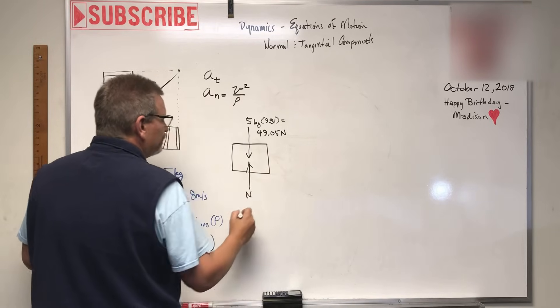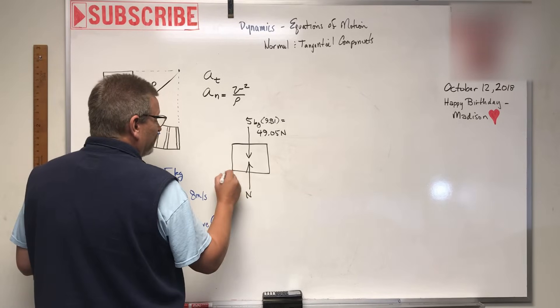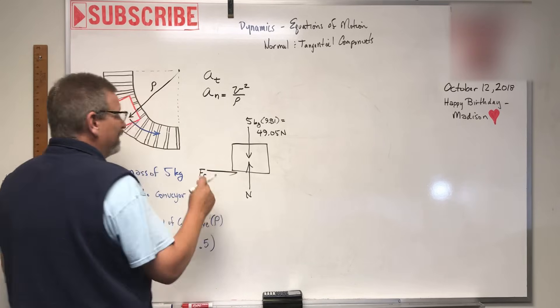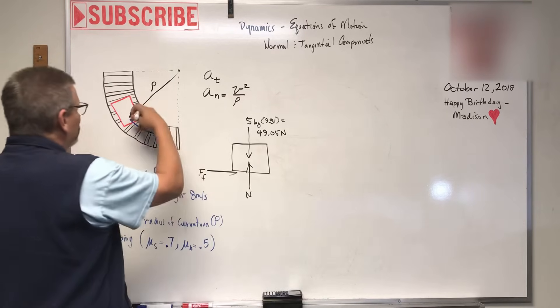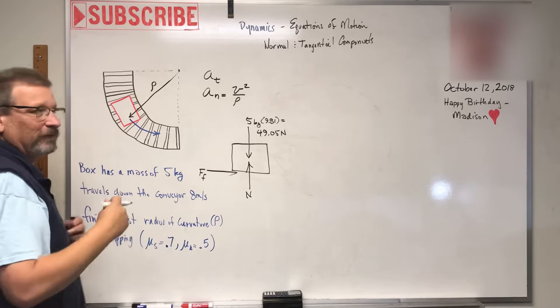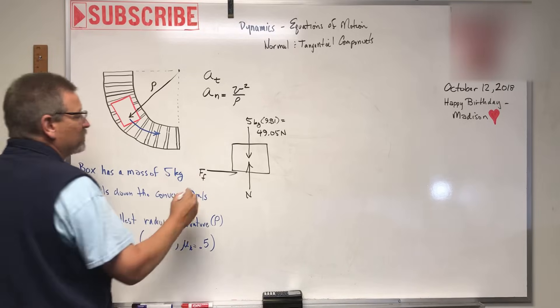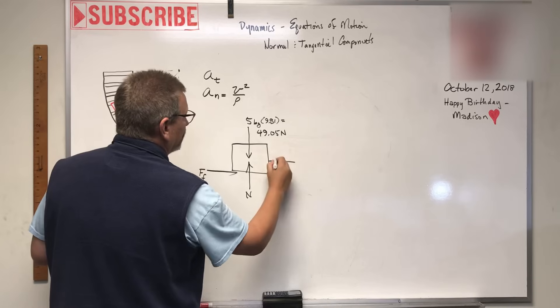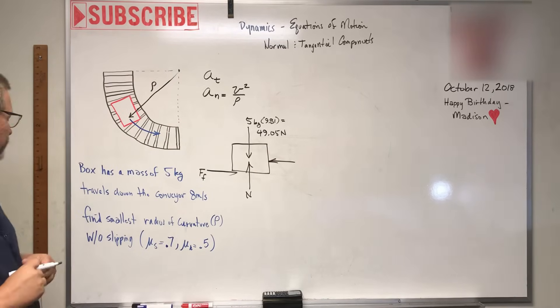What else is going on? There's a normal force down here of 49.05, and then there's a friction force preventing the box from flying off the conveyor. They give us some things down here for that, so I'll be able to calculate that. And then there's this force here trying to push the box off - that's the centripetal force.